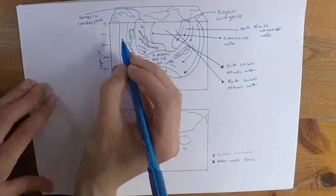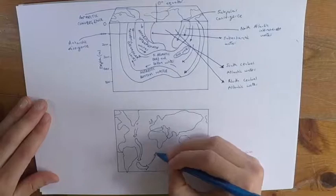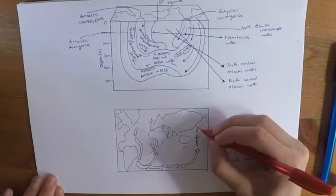This deep thermohaline circulation is sometimes referred to as the Great Ocean conveyor belt, as being drawn on screen now, which is controlled by surface circulation and density in bottom waters.